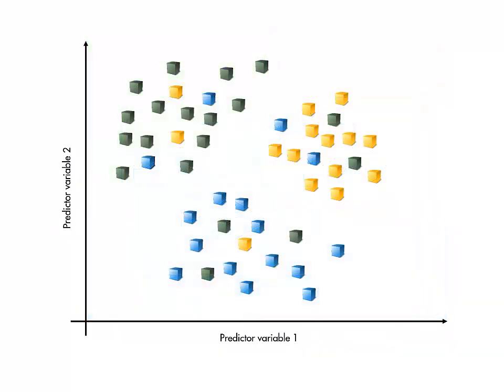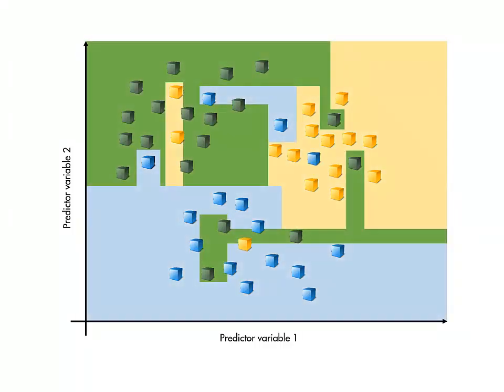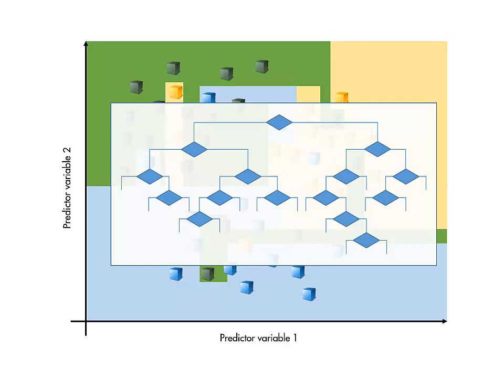As always, realistic data will have noise. Theoretically, a sufficiently complex tree could fit an arbitrarily complex boundary between points. However, this generally means that the model is overfitting the data.